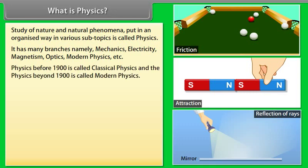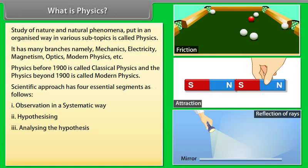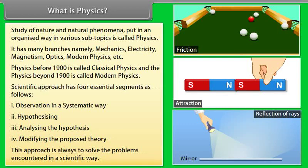Physics before 1900 is called classical physics, and physics beyond 1900 is called modern physics. Scientific approach has four essential segments as follows: Number 1, observation in a systematic way. Number 2, hypothesizing. Number 3, analyzing the hypothesis. Number 4, modifying the proposed theory. This approach is always to solve the problems encountered in a scientific way.